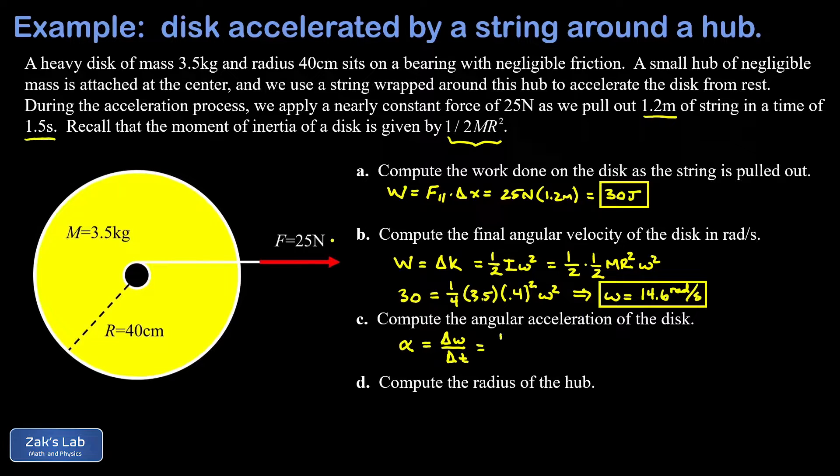So delta omega divided by delta t. Well, the change in angular velocity is just the final minus initial, but the initial was 0. So I have 14.6 radians per second. That's divided by how long it took to get up to that speed, and that was given in the problem, that's 1.5 seconds. When I run the numbers on this, alpha comes out to 9.73 radians per second squared.